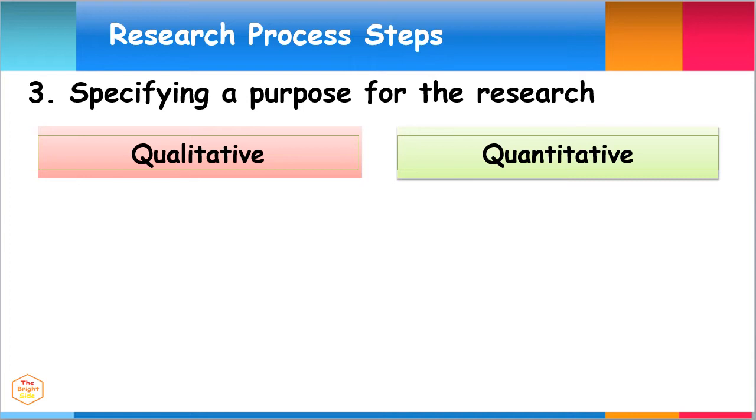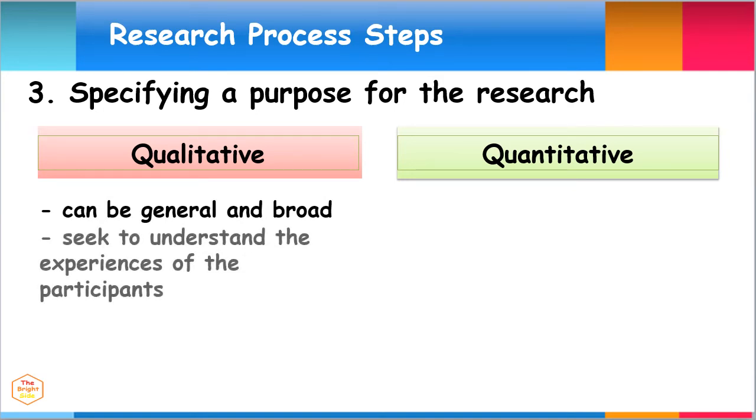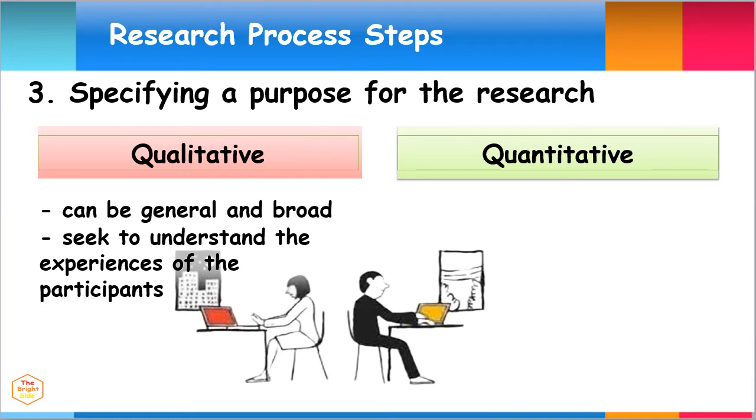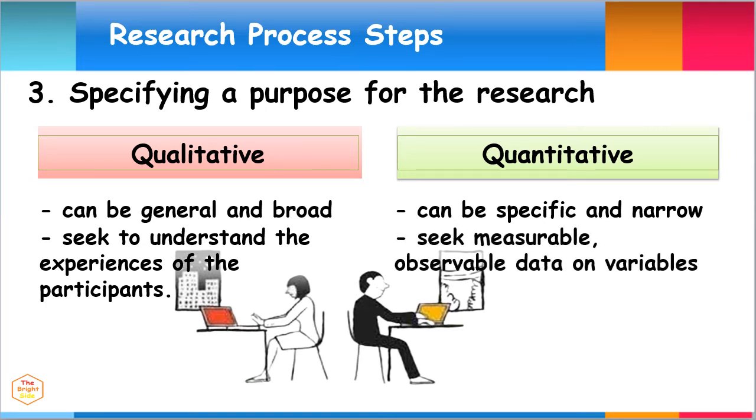In qualitative research, the purpose for the research can be general and broad. It aims to understand the experiences of the participants. In quantitative research, the purpose for the research can be specific and narrow. It aims to seek measurable and observable data on variables.